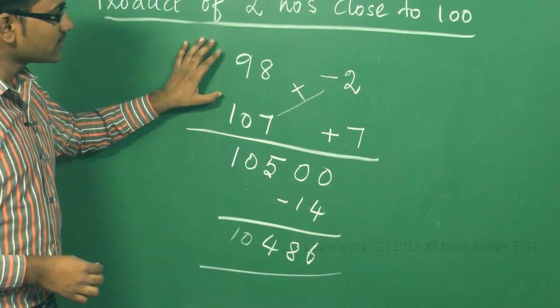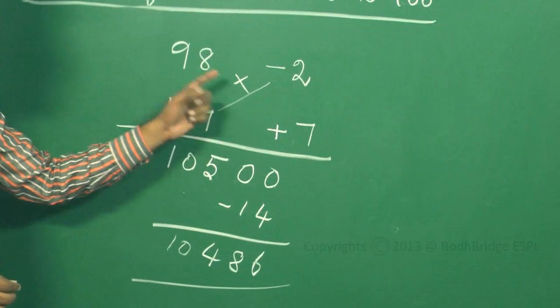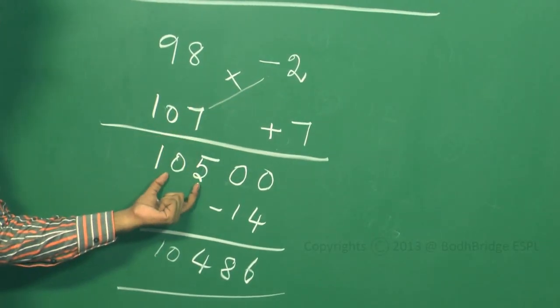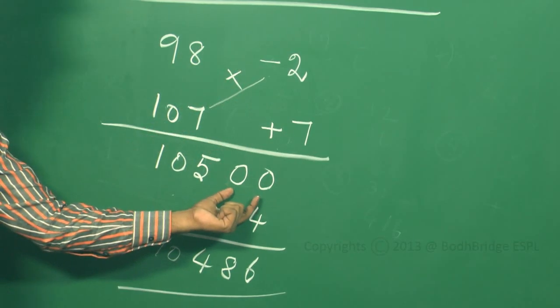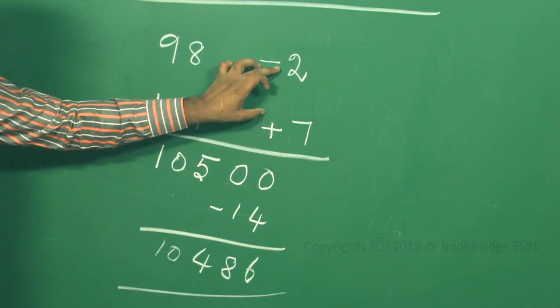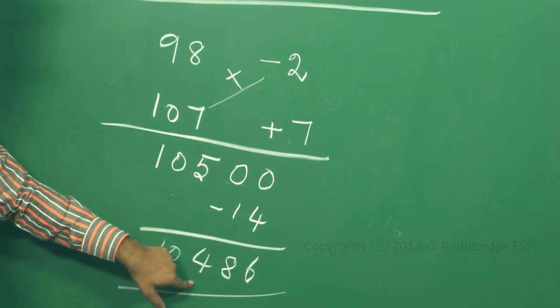The steps you have to do is how much it is less or more, you have to check. By cross adding and subtracting, you will get the same number that will be in this case 105. This is close to 100, so we are adding two zeros. Then the product of these two will be added at the end. That is minus 14, giving 10486.